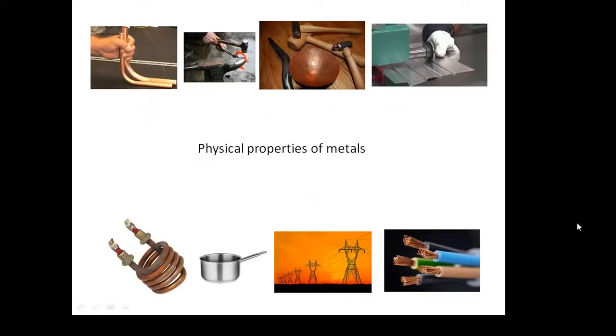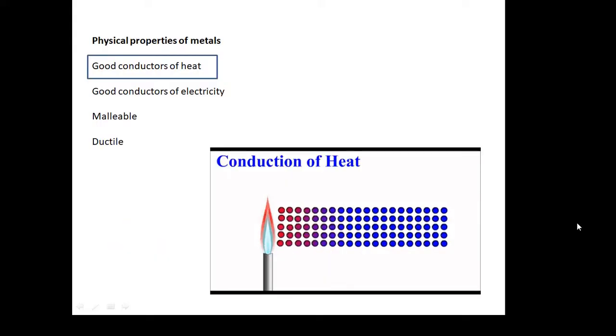Now, the physical properties of metals. Metals are very useful materials. These are the four properties we need to know: they're good conductors of heat, good conductors of electricity, they are malleable, which means you can hammer them into shape, and they are ductile, which means you can draw them into wire.